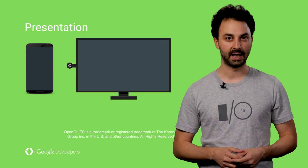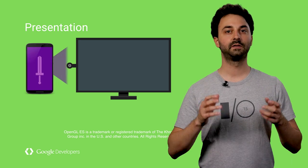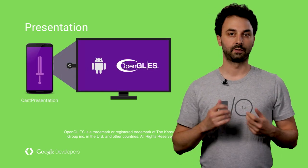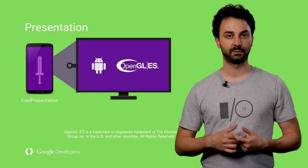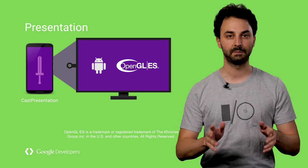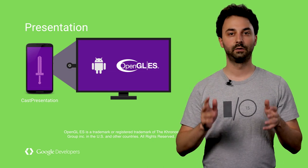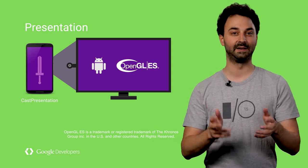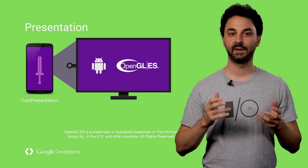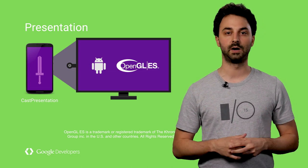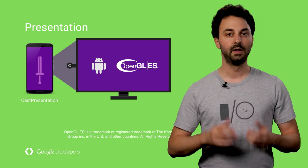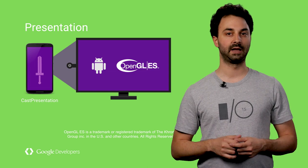The Presentation APIs are Android's gateway to other screens. The Remote Display APIs provide a specialized presentation that your app must subclass to present your game on the remote screen. You can, in fact, display any view you want, from a regular Android layout to an OpenGL ES surface.